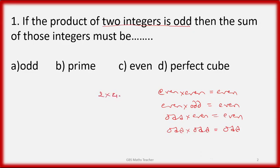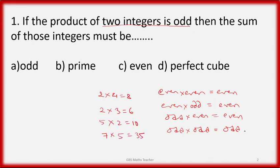For example: 2×4 = 8, 2×3 = 6, 5×2 = 10 — all even results. But 7×5 = 35, which is odd. This condition is satisfied only when both integers are odd.